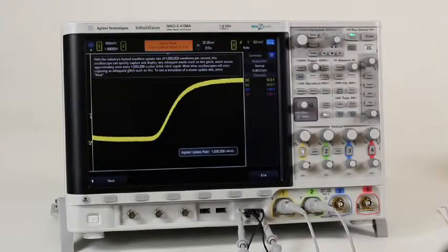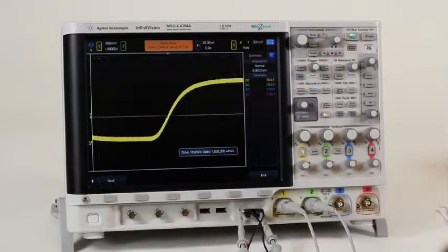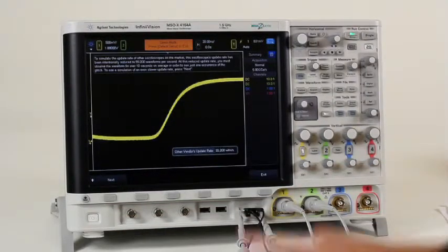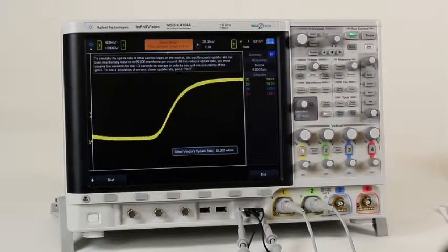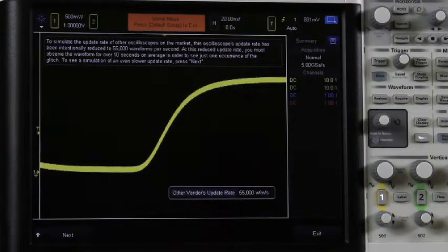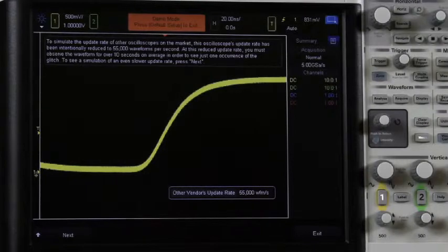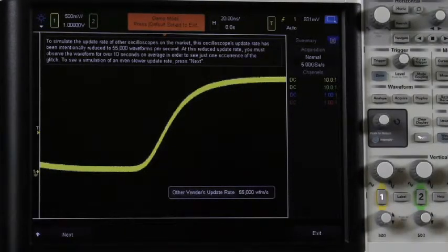We can detune the 4000X series scope update rate and simulate the update rate of another vendor's 55,000 waveforms per second update rate. If you wait long enough, the scope may catch it. But given an engineer's likely debug behavior, they could have easily moved on to the next test point before the glitch was ever captured and displayed.